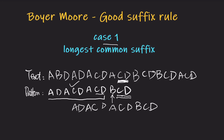Now how do we compute the increment value of the text pointer? Previously it's here. The skip value is equal to this distance because we need to compare from the rightmost position each time. This distance can be divided into two parts. The first part is here — we can call this part the surface. So it's the length of the surface.